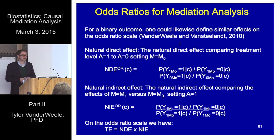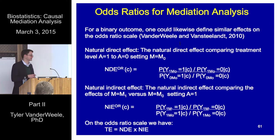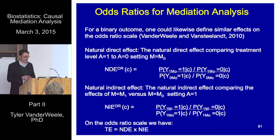Likewise, we can do the same thing for the natural direct and indirect effects. For the natural direct effect, it's again the same two counterfactuals — y1m0, y0m0 — fixing the mediator to the level it would have been in the absence of exposure, that's m0, and changing the exposure from 0 to 1, but now taking the odds of the outcome in each case. For the natural indirect effect, same two counterfactuals — y1m1, y1m0 — fixing the exposure to 1, changing the mediator from what it would have been in the absence of exposure to what it would have been in the presence of the exposure, but again on the odds ratio scale.